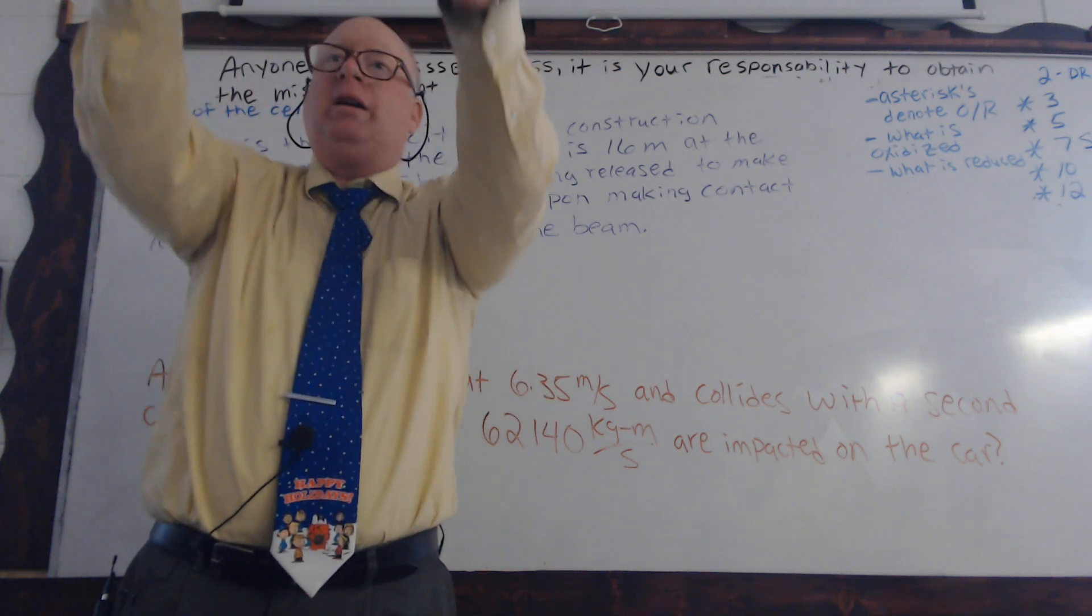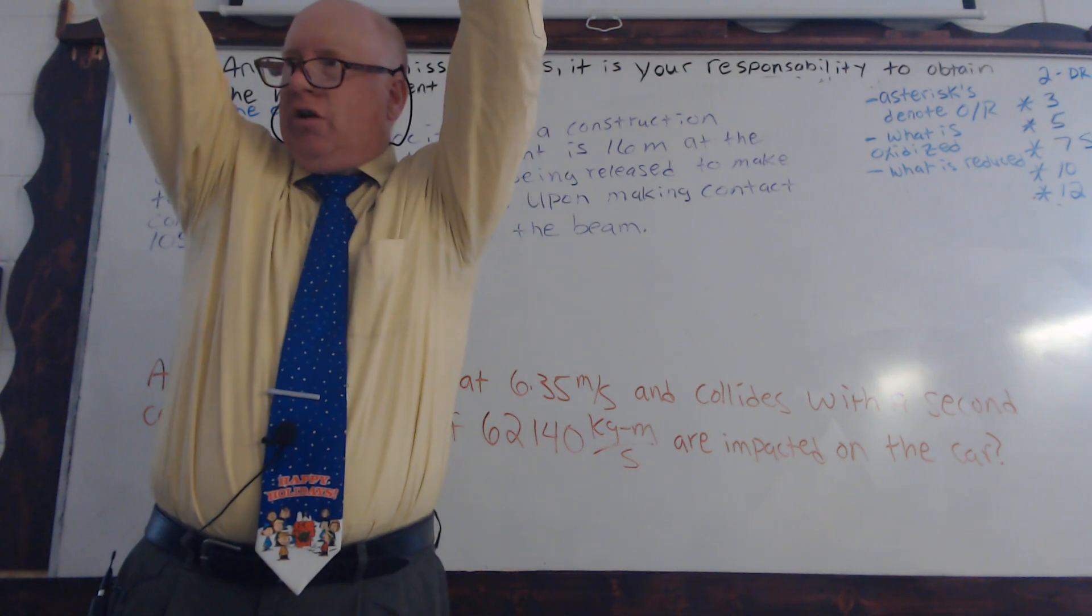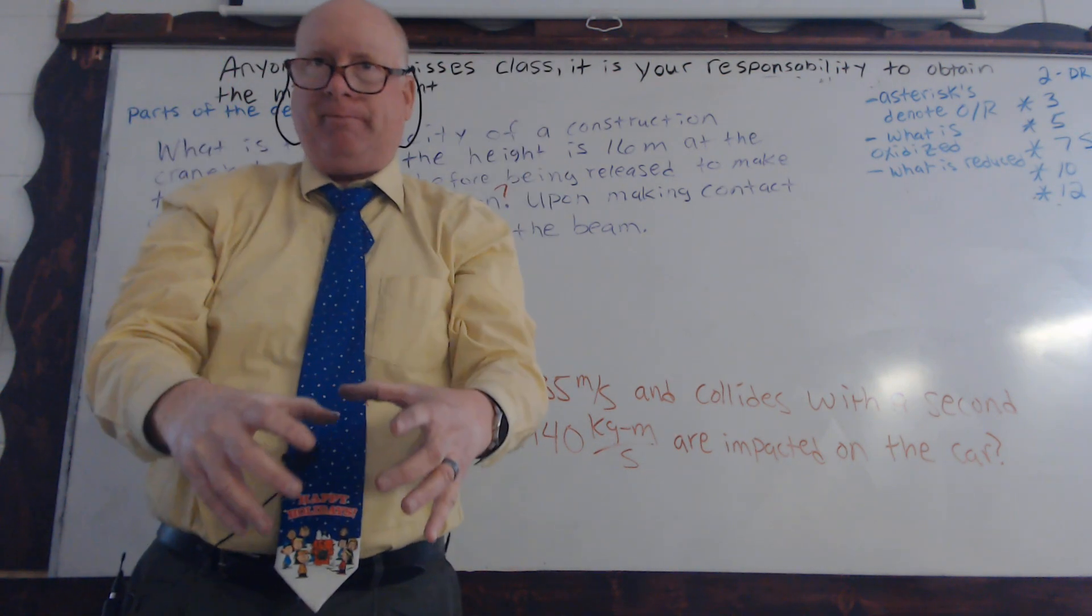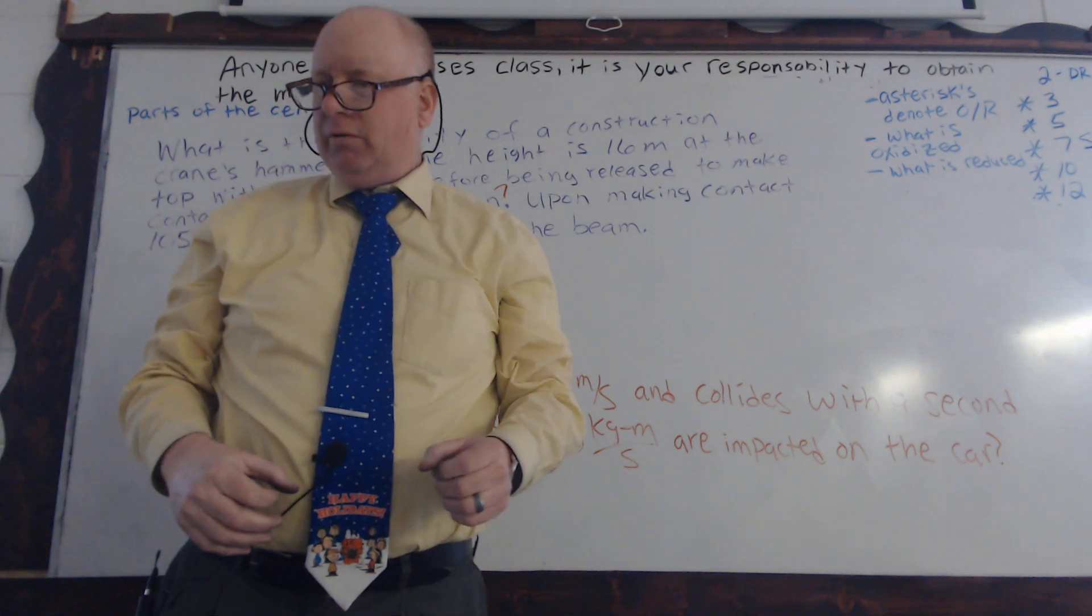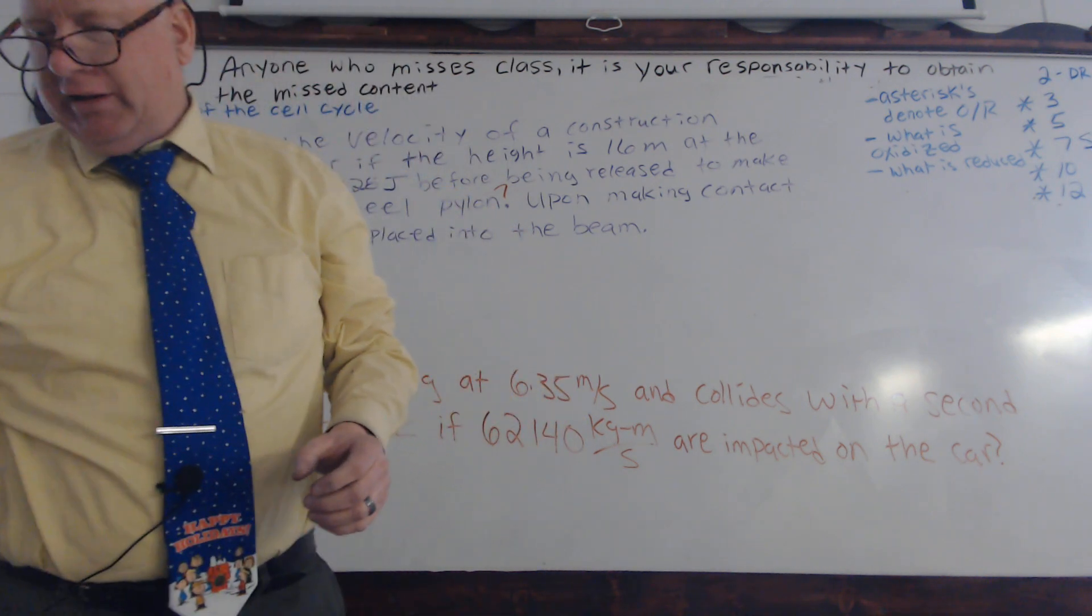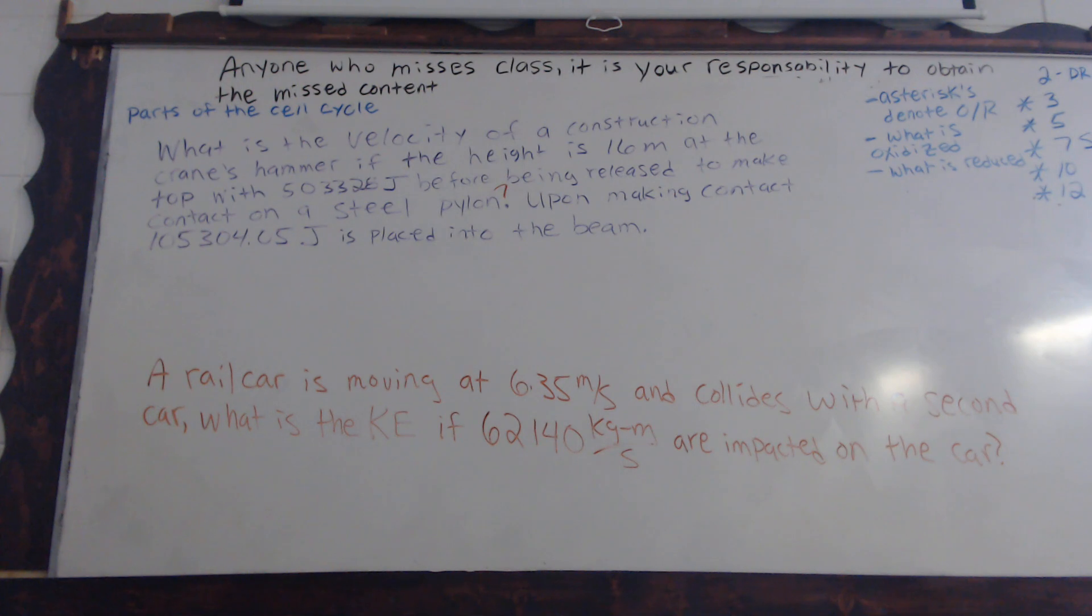Okay? So when it goes back up top, it's storing that energy and then lets it go. So we're just going where the numbers lead us, and with this, it says, what is the velocity of a construction crane's hammer if the height is 16 meters at the top with 503,328 joules before being released to make contact on a steel pylon?